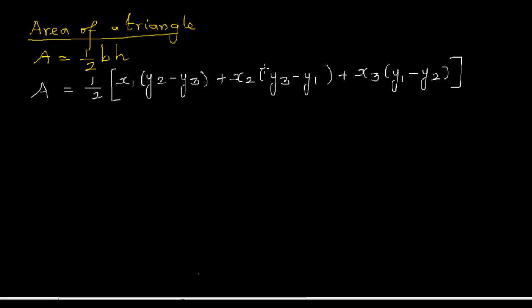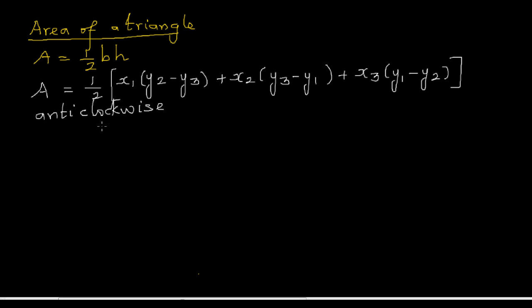It's a cyclic order of one, two, and three — very simple to remember. x1 is the first coordinate times (y2 minus y3), and so on. The only thing we have to do to apply this formula is the coordinates should be in the anti-clockwise direction to get a positive answer. If you go clockwise, the answer would be negative.